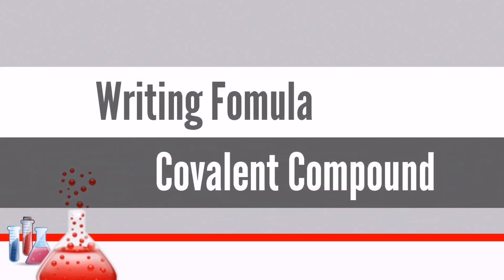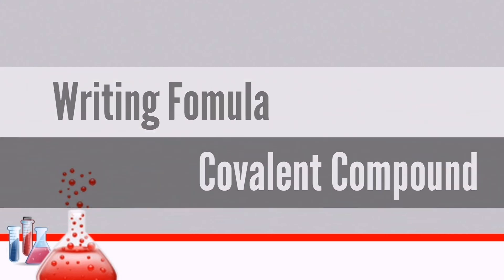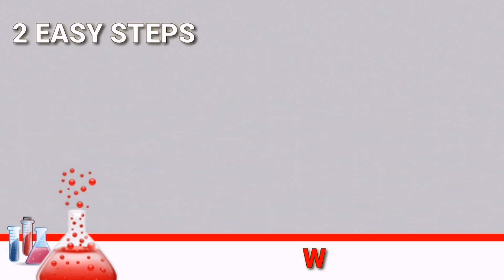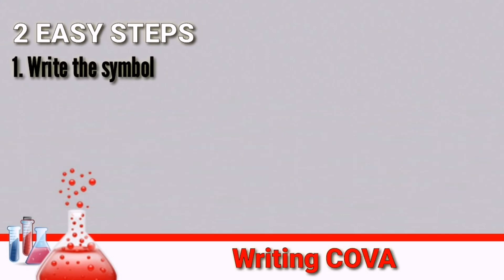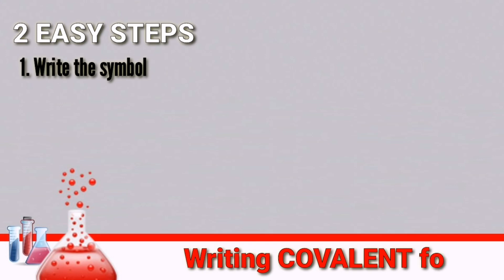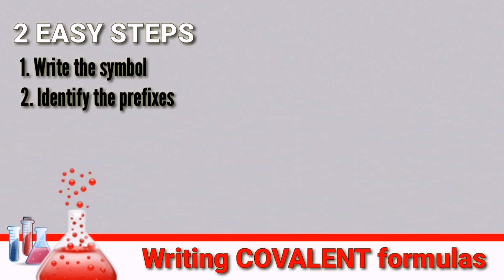In this video, you're going to learn how to write a covalent compound formula in just two easy steps. First, write the symbol of the elements, then identify the prefixes being used in the compound.